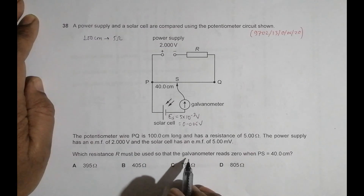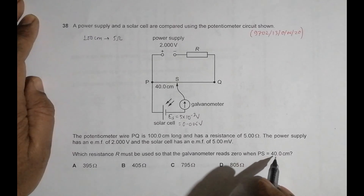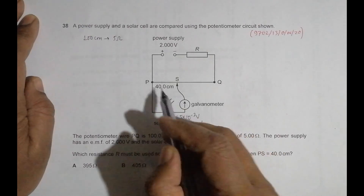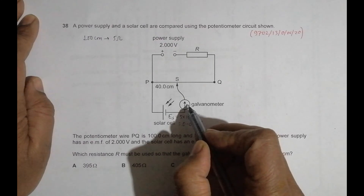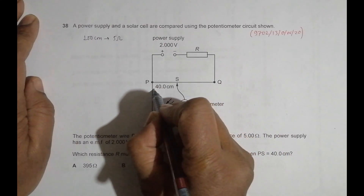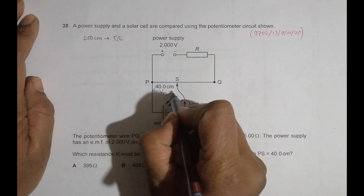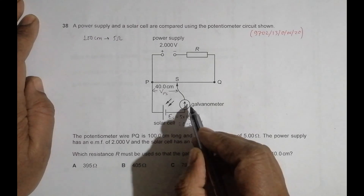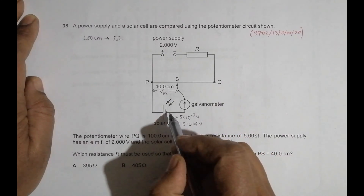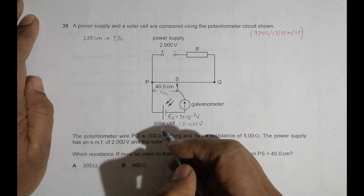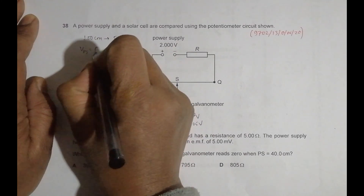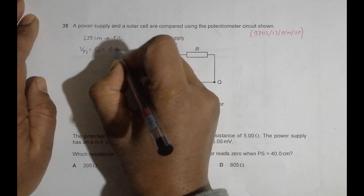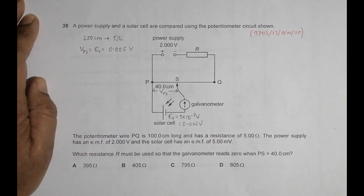The question asks what resistance R must be used so that the galvanometer reads 0 when PS equals 40 centimeters. If the galvanometer reads 0, then the potential difference VPS must equal the EMF of the solar cell ES. So VPS equals ES equals 0.005 volt.